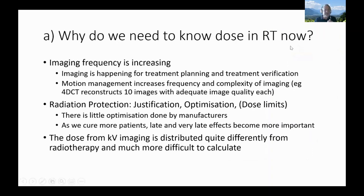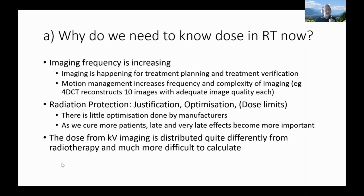Why is this a particular topic now? Imaging frequency is increasing. Virtually every new linear accelerator these days is sold with cone beam CT on board. Radiotherapy also relies much more on certain types of motion management, which increases imaging frequency and complexity. For example, 4D CT reconstructs 10 images — 10 times the dose — hopefully using adequate dose for each phase. Radiation protection is also better understood now, and KV imaging dose is distributed quite differently from radiotherapy dose.